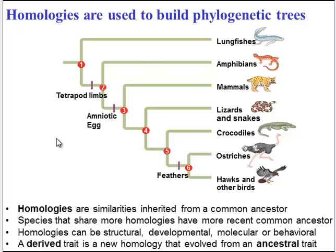Some homologies are known as derived traits because they have recently evolved from an ancestral trait. So oftentimes on phylogenetic trees, those derived traits — those newly evolved traits — will be shown using a little hatch mark.